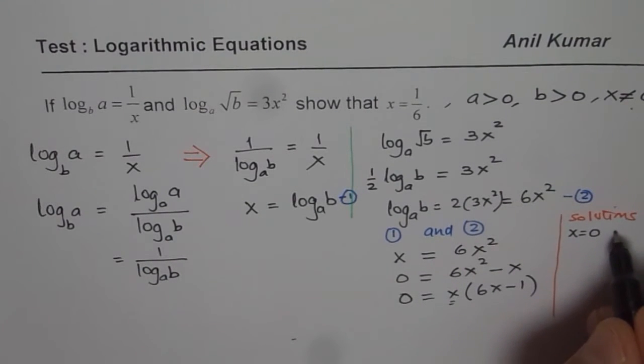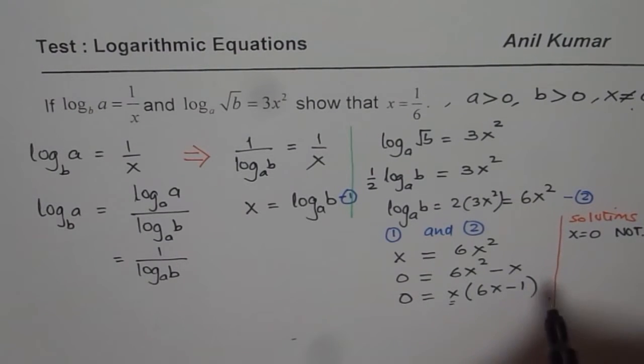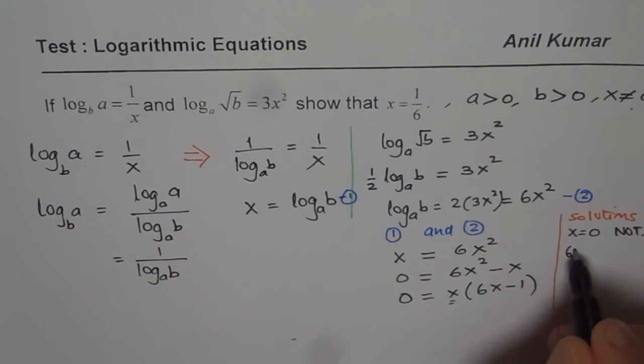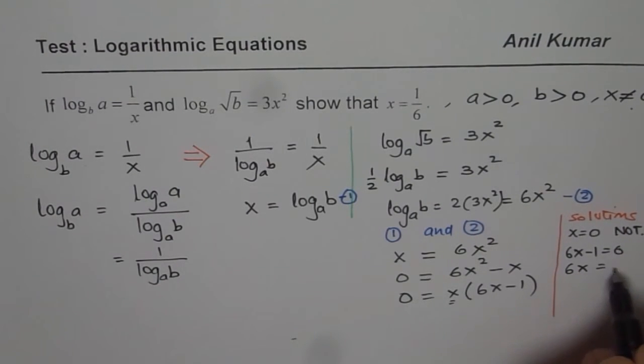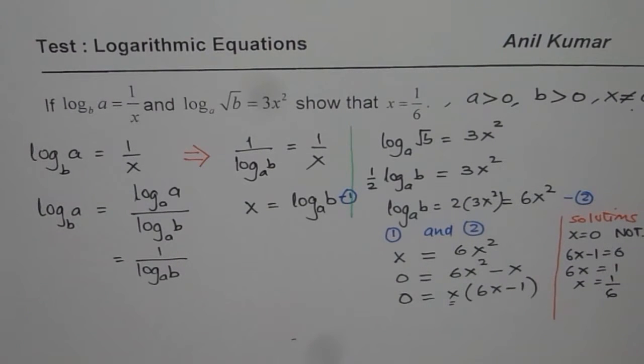So that is not our solution. The other one is that 6x minus 1 equals 0 or bringing 1 to that side, 6x equals 1 or x equals 1 over 6. So this is the second solution.